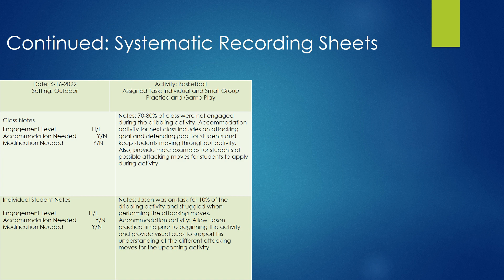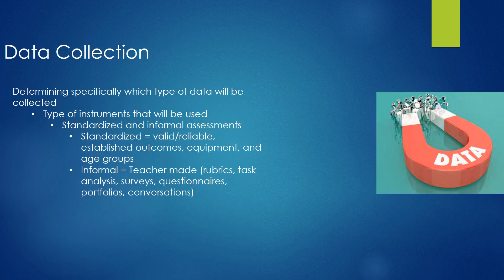Here's another example for basketball — same format: identifying the setting, individual and small group practice and gameplay, and looking at engagement levels. Taking notes while collecting data is a big thing. Your study begins when you start observing the student in their natural environment. For instance, 70 to 80 percent of the class were not engaged during the dribbling activity. For the individual student, Jason was on task for only 10 percent of the dribbling activity and struggled with performing the attacking move.